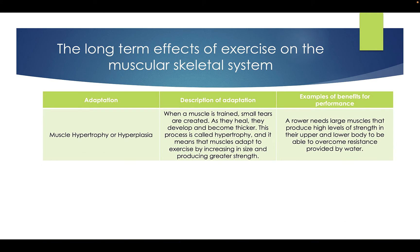Muscle hypertrophy or hyperplasia: when a muscle is trained, small tears are created, and as they heal they will develop and become thicker. This process is called hypertrophy and it means that the muscle adapts by increasing in size and producing greater strength. A rower needs large muscles that produce higher levels of strength in their upper and lower body to be able to overcome the resistance provided by water.